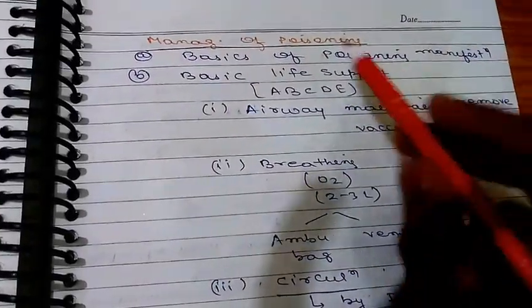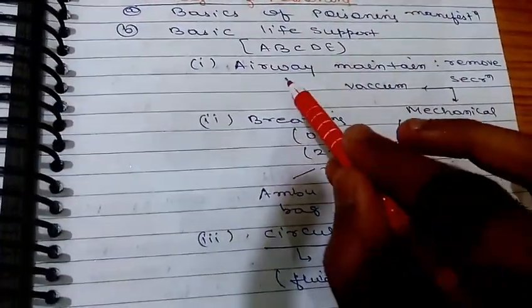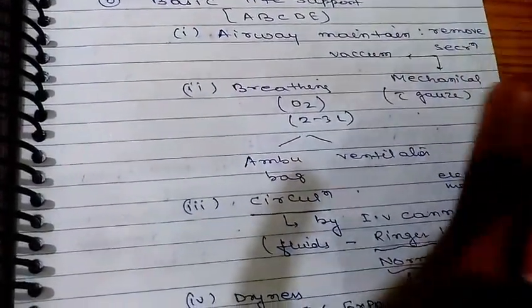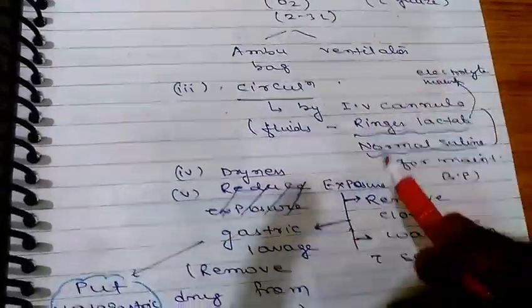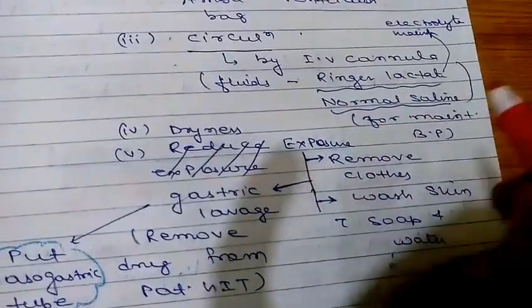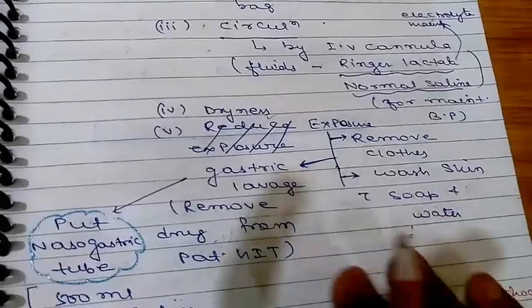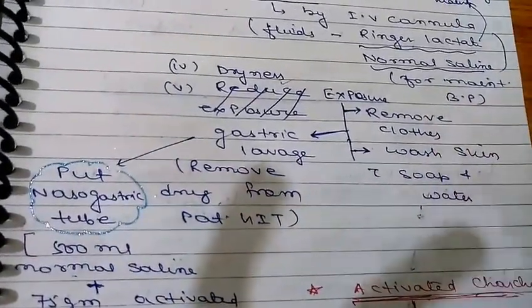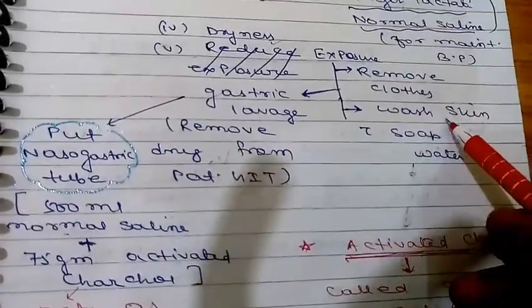Now we look at the management of poisoning — important short notes. First, basic life support using the ABCD mnemonic. A — Airway maintenance: remove secretions by vacuum method or mechanically using gauze. B — Breathing: ensure breathing by giving Ambu bag or placing the patient on a ventilator to maintain oxygen availability. C — Circulation: give IV cannula and provide fluids containing Ringer lactate for electrolyte maintenance and normal saline for maintaining BP. D — Exposure: decrease exposure to the insecticide or nerve gas.